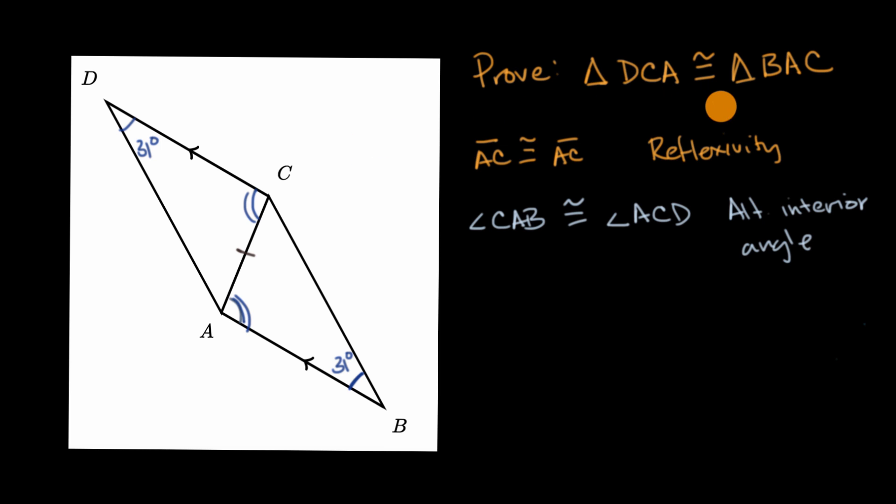So, we can now deduce by angle-angle-side postulate that the triangles are indeed congruent. We now know that triangle DCA is indeed congruent to triangle BAC because of angle-angle-side congruency, which we've talked about in previous videos.